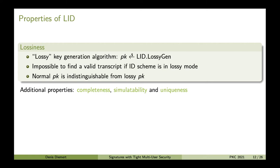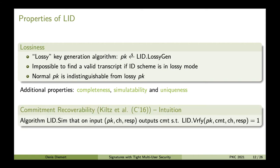Uniqueness will be our main tool to achieve strong unforgeability. We also use another property for our refinement called commitment recoverability. Commitment recoverability intuitively means that there is an algorithm Sim that on input public key, challenge, and response, outputs a commitment such that commitment, challenge, and response form a valid transcript under the public key. So given a challenge and a response, we can recover the commitment.